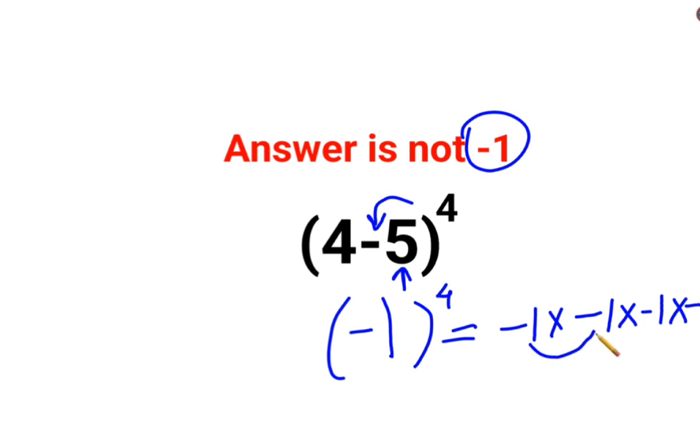So negative into negative always gets you positive. Similarly, minus 1 multiplied by minus 1. So positive into negative gets you minus 1 multiplied by minus 1. Now again, negative into negative, the answer comes out to be positive 1.